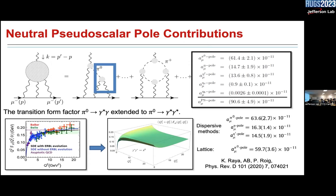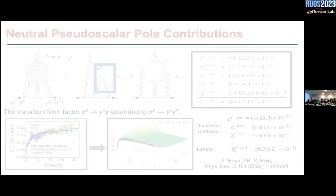At two-loop level, the transition form factor π⁰→γ*γ should be extended to π⁰→γ*γ*, and this enters as the hadronic light-by-light contribution because the two photons can produce a π⁰ which goes back to two photons. Not only π⁰ but other pseudoscalar mesons contribute, including a box-like diagram where charged pions or kaons run around. We extended the π⁰→γ*γ calculation to both photons off-shell, obeying the conformal limit of QCD correctly, and computed contributions from π⁰, η, η', η_c, and η_b.